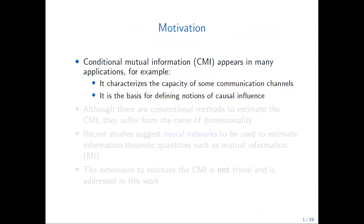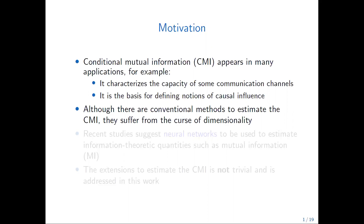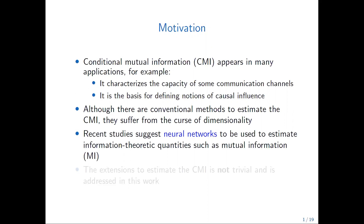The motivation of this work is studying Conditional Mutual Information, denoted as CMI. It appears in many applications for characterizing the capacity of communication channels or as a basis for defining notions such as causal influence. Although there are conventional methods to estimate the CMI, they suffer from the curse of dimensionality. Recent studies suggest neural networks to estimate information-theoretic quantities such as mutual information or relative entropy. The extension to estimate the CMI is not trivial and is addressed in this work.